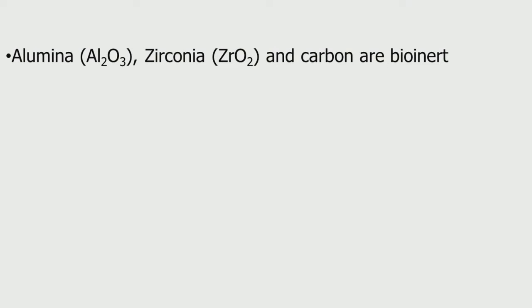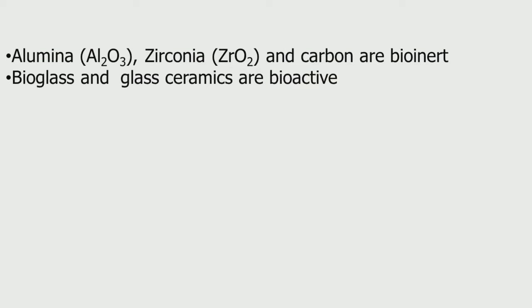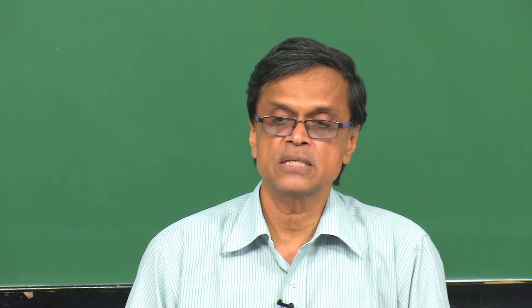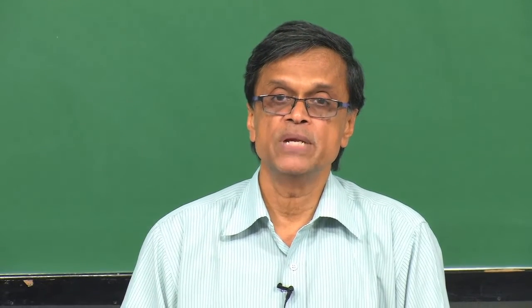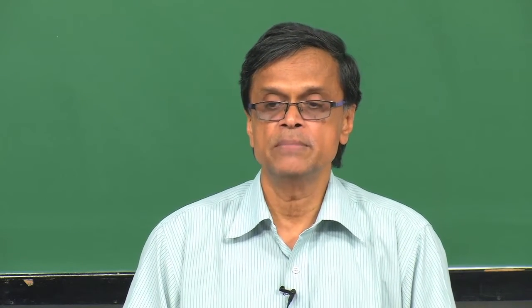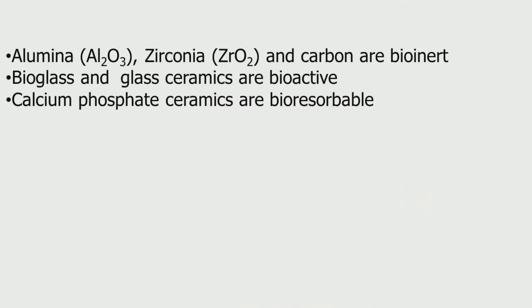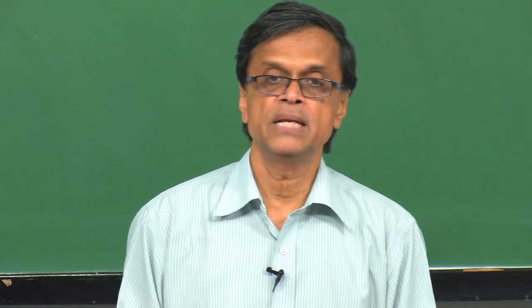Alumina (Al2O3), zirconia, and carbon are bioinert — they do not cause any adverse reaction to the host system. Bioglass or glass ceramics — silica-type material (SiO2) — are bioactive, meaning they take part in the integration process. Calcium phosphate ceramics are bioresorbable, meaning they will completely disappear over a period of time. So if used for bone filling or scaffolds, when the bone starts growing, the material will get completely resorbed. That is the beauty of calcium phosphate.